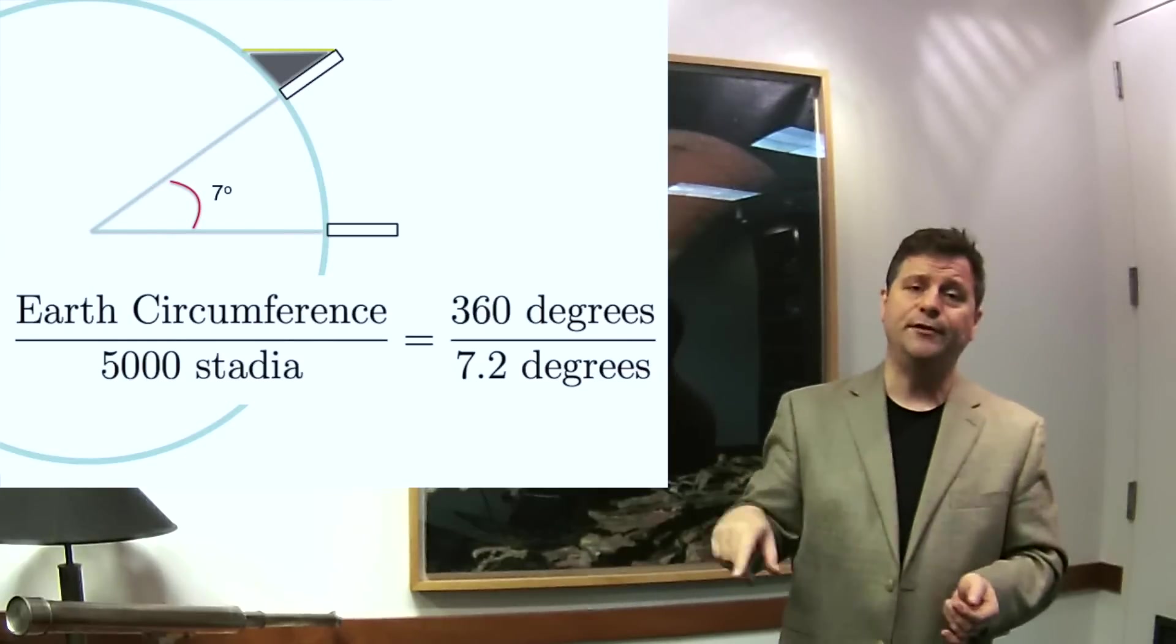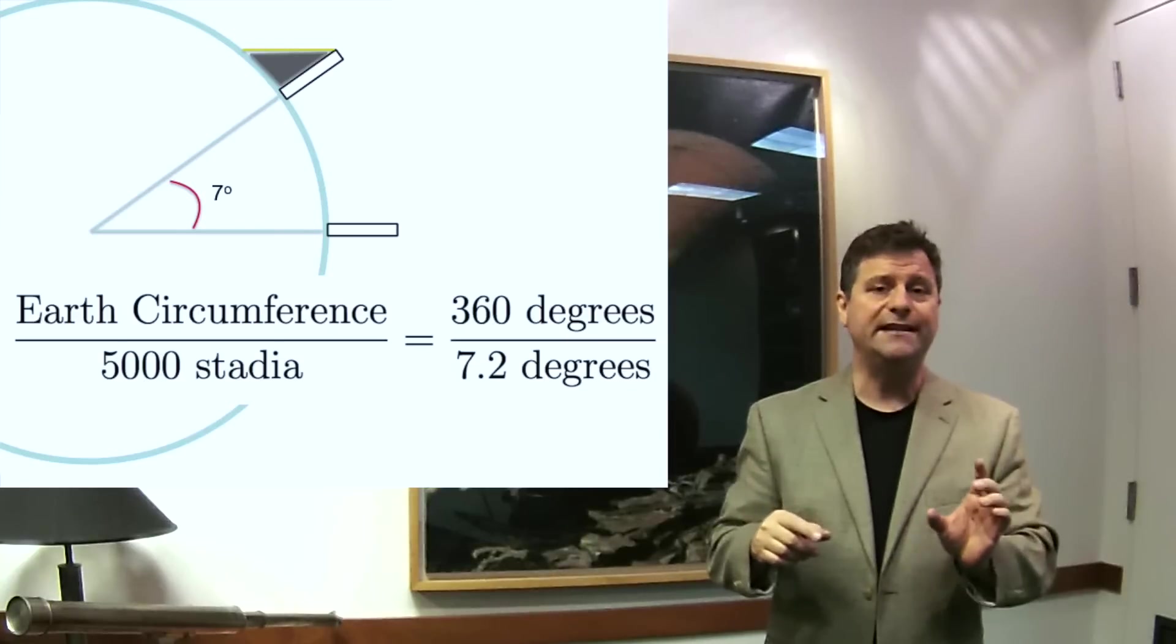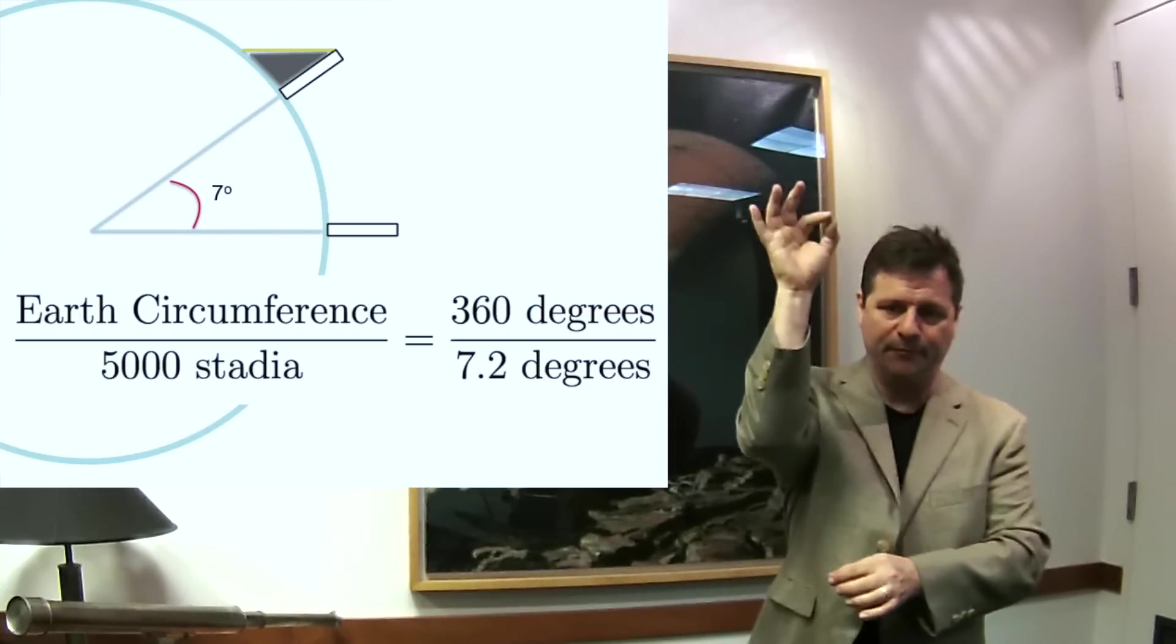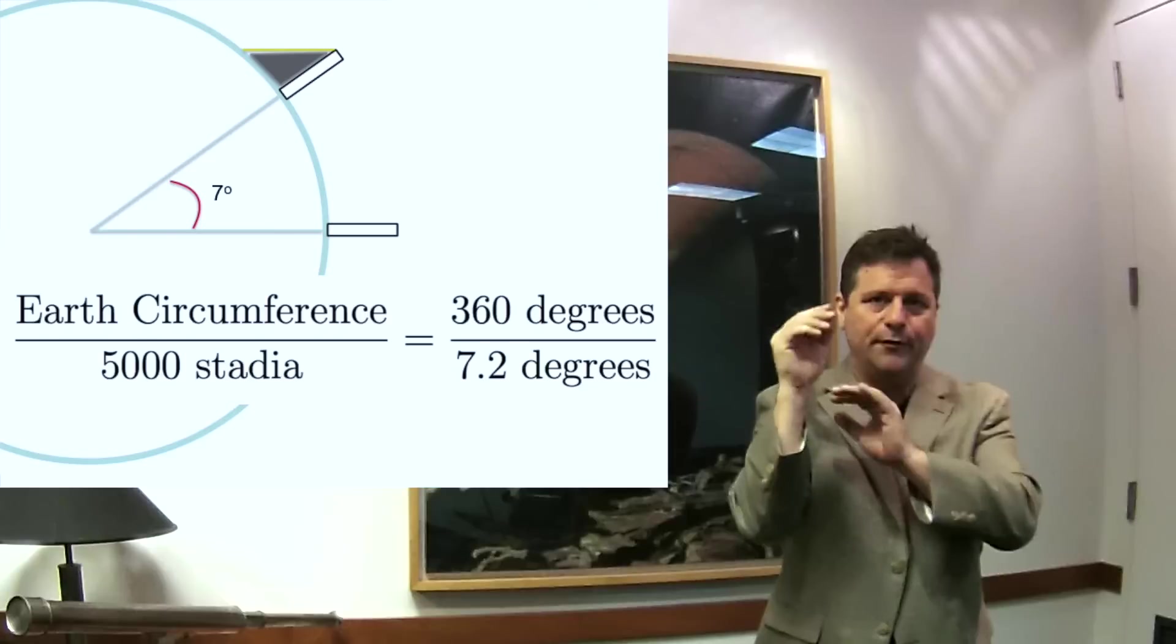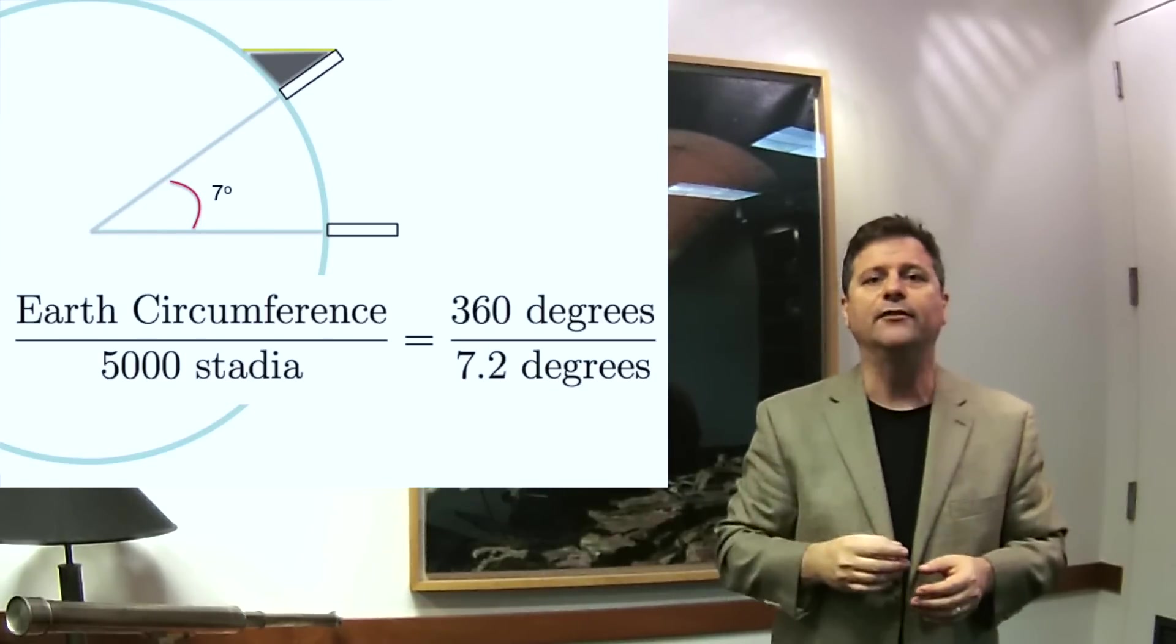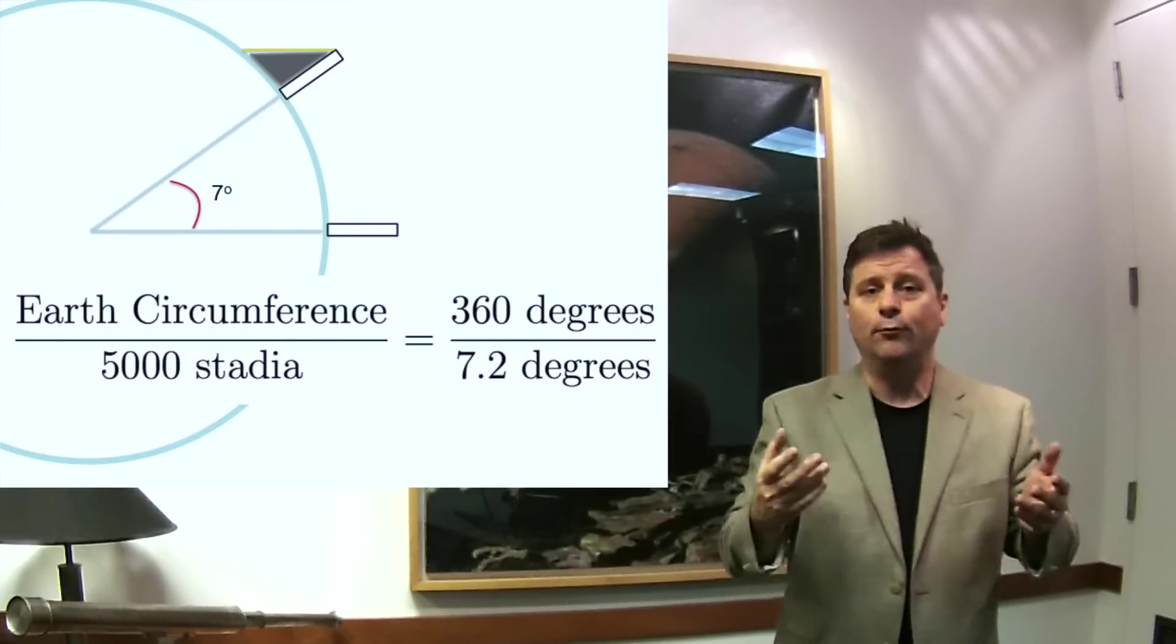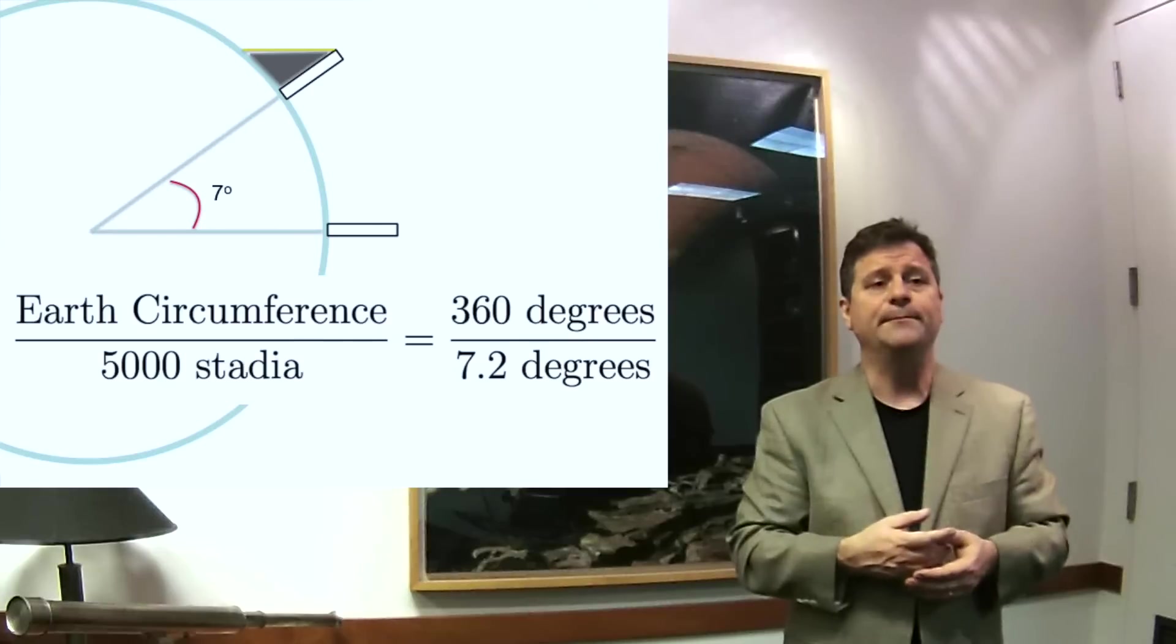We know that the circle has 360 degrees. And if the shadow cast is only seven degrees, meaning a tall pillar had some length of shadow, you can get this angle by looking at the angle of the shadow and determining it from that. You can use a plumb line and so forth. There's a lot of different ways to measure angles of shadows and they weren't alien to people of his time.